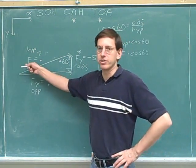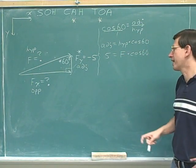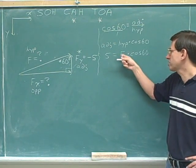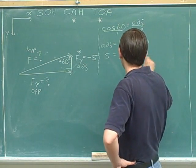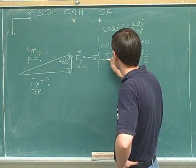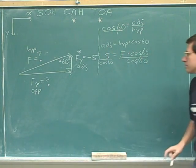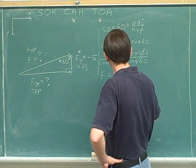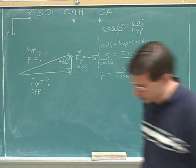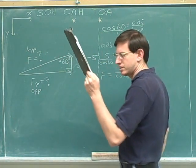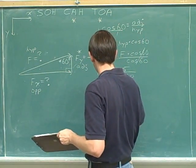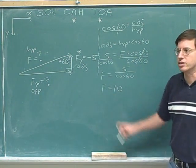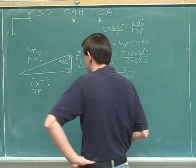Five equals f times cosine 60. Now we're trying to figure f out, which means we have to get f by itself in this equation. The cosine 60 is attached to the f by multiplication. The opposite of multiplication is division. If we're going to divide one side, we have to divide both sides. Five divided by cosine 60. It appears that that is 10. I think that's exactly 10. So f equals 10.